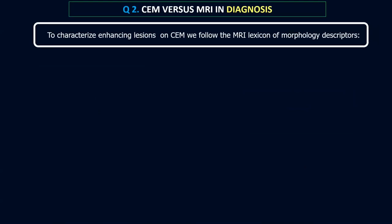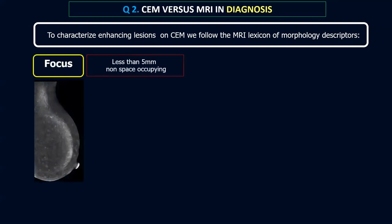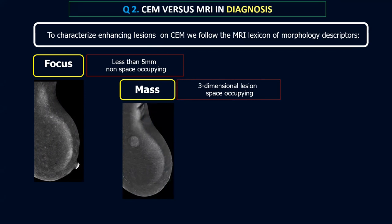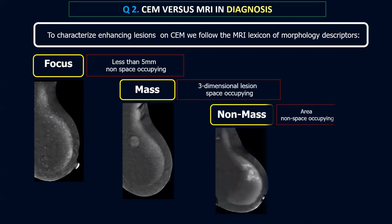Because of overlap between benign and malignant enhancing lesions, we should follow specific morphology descriptors to classify lesions. To characterize enhancing lesions on contrast mammography, since we do not have a lexicon specific for contrast mammography, we follow the MRI lexicon of morphology descriptors. Lesions can be classified into an enhancing focus — a lesion less than 5 mm, non-space occupying — enhancing mass lesions, which are three-dimensional and space occupying, and lastly non-mass lesions, which are not three-dimensional, just an enhancing area that is non-space occupying.